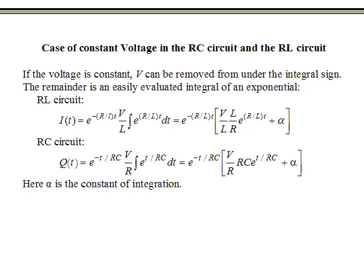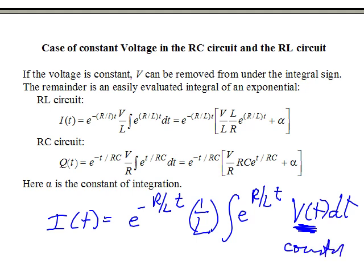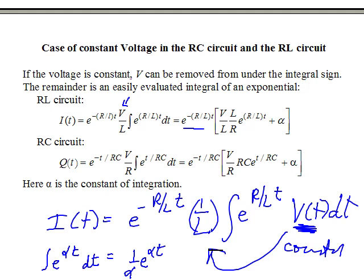For constant voltage, the current is E to the minus R over L times t, times 1 over L, times the integral of E to the R over L times t times voltage V. Since the voltage is constant, it can be moved out from under the integral sign. Now I just have to integrate an exponential, which is straightforward. The integral of E to alpha t dt is 1 over alpha times E to the alpha t plus a constant.